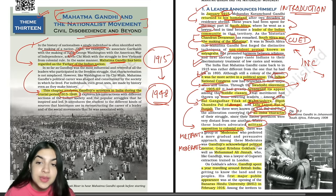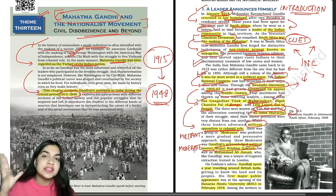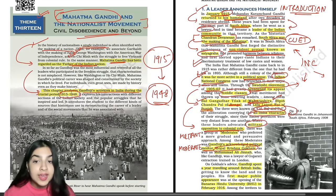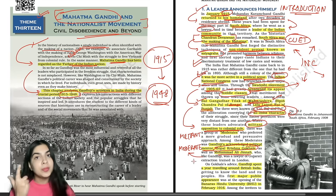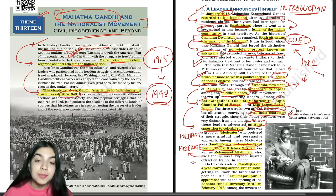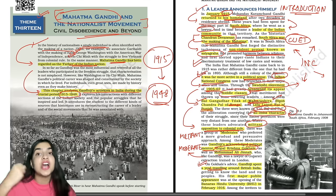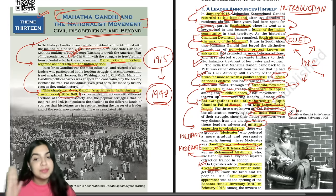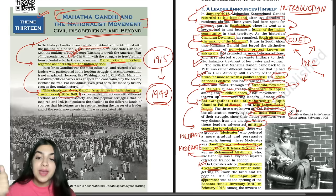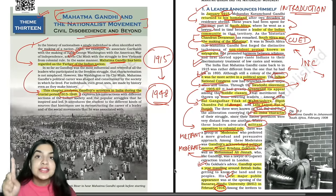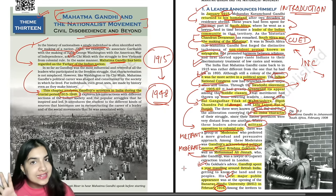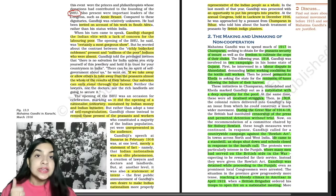Among the moderates was Gandhi ji's political mentor — Gopal Krishna Gokhale. This is an important CUET question: who was Gandhi ji's political mentor? The answer is Gopal Krishna Gokhale. Mohammad Ali Jinnah was also a moderate. As advised by Gokhale, Gandhi ji was told to travel around British India for one year to understand what was happening in society. After one year, in February 1916, Gandhi ji made his first public appearance when Banaras Hindu University was being established.